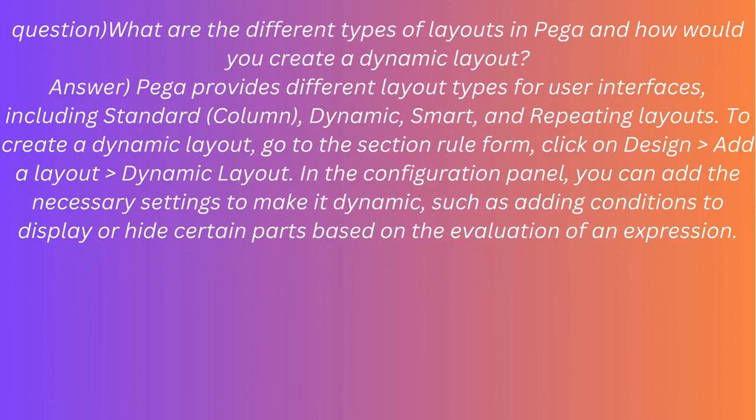Question: What are the different types of layouts in PEGA, and how would you create a dynamic layout? Answer: PEGA provides different layout types for user interfaces, including standard, column, dynamic, smart, and repeating layouts. To create a dynamic layout, go to the section rule form, click on design, add a layout, and select dynamic layout. In the configuration panel, you can add the necessary settings to make it dynamic, such as adding conditions to display or hide certain parts based on the evaluation of an expression.